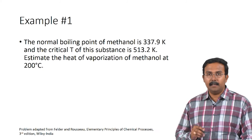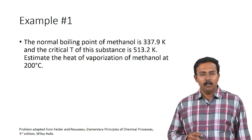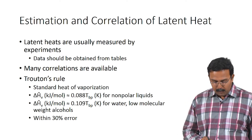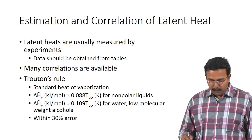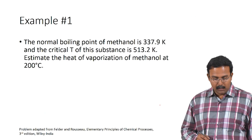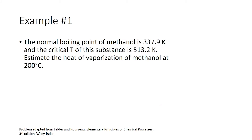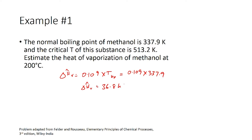Trouton's rule has two equations: one for nonpolar liquids and one for water and low molecular weight alcohols. Since methanol is a low molecular weight alcohol, we use the second equation: ΔHv = 0.109 × Tb. With Tb = 337.9 K, this gives ΔHv = 0.109 × 337.9 = 36.8 kJ/mol.